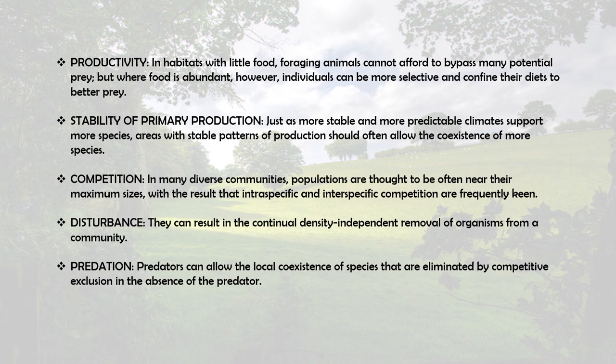Selection for competitive ability is therefore strong, and the most successful organisms in these communities have their own zone of competitive stability. Organisms that have specialized in foods or habitats are at a competitive advantage, and the resulting small niches make high diversity possible. The next factor is disturbance, which can result in the continual density-independent removal of organisms from a community. Disturbances such as catastrophic winters or natural calamities are infrequent and can either enhance or reduce diversity.